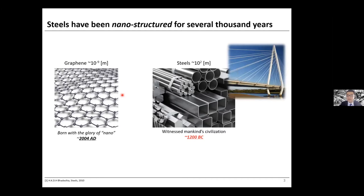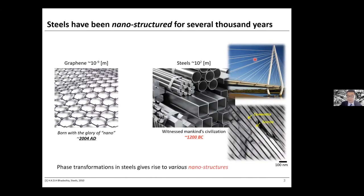If we take the simple example of a cable-stay bridge and cut a small piece to examine under a microscope, what we see is a nano composite consisting of alternating layers of cementite and ferrite resulting from a eutectoid transformation — giving us a nanostructured pearlite. All kinds of phase transitions in steels have given rise to various nanostructures, enabling us to tune the mechanical properties of steels at a bulk scale.